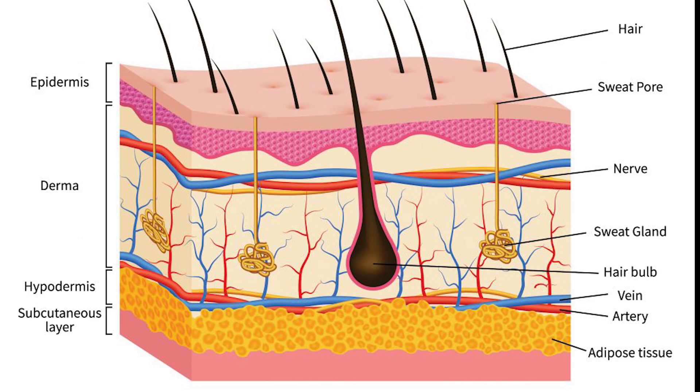Keratinocytes from the stratum corneum are eventually shed from the surface in a process called desquamation. The epidermis contains no blood vessels, and cells in the deepest layers are nourished by diffusion from blood capillaries extending to the upper layers of the dermis.